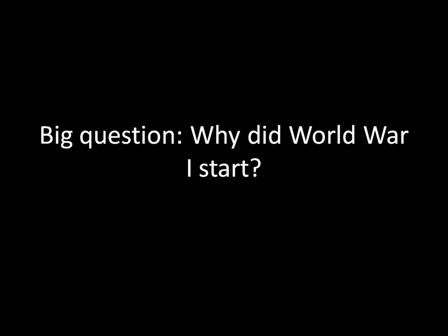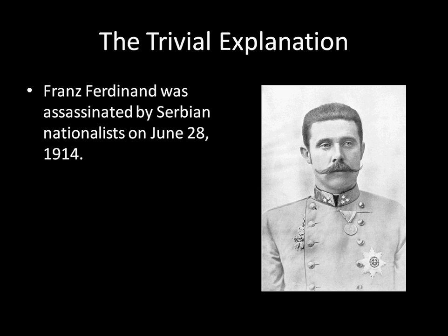If you recall back to a few videos ago, we talked about a trivial explanation when we were discussing the difference between proximate and underlying causes. The trivial explanation, or the proximate cause of World War I, was that Franz Ferdinand was assassinated by Serbian nationalists on June 28, 1914.